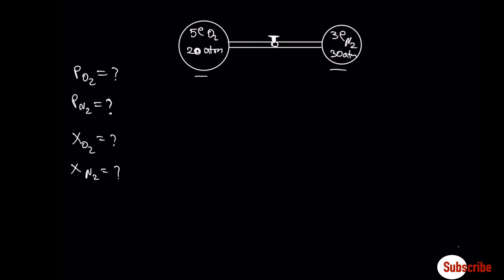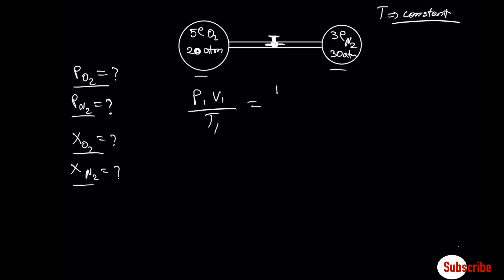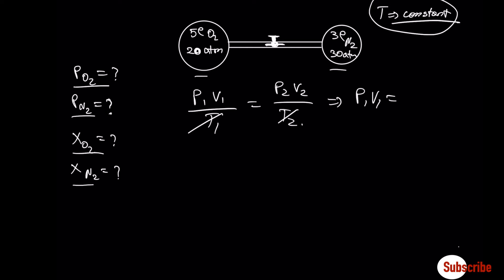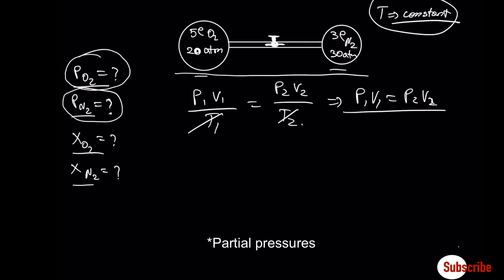Let's move to a more complex example dealing with Dalton's law for partial pressure and mole fraction. We have two containers connected by a tube with a valve. If we open the valve and let the gases mix, what are the final pressures for oxygen and nitrogen, and the mole fractions for each? This system operates at constant temperature. Writing the combined gas law and simplifying temperature gives us P1V1 = P2V2, which is Boyle's law — valid at constant temperature and number of moles. We will use Boyle's law to find the individual pressures after the two gases mix.